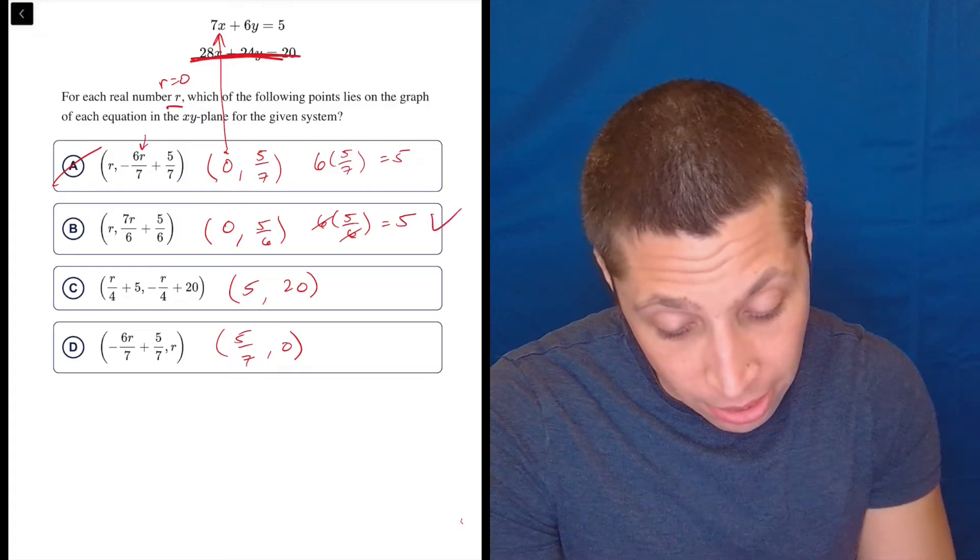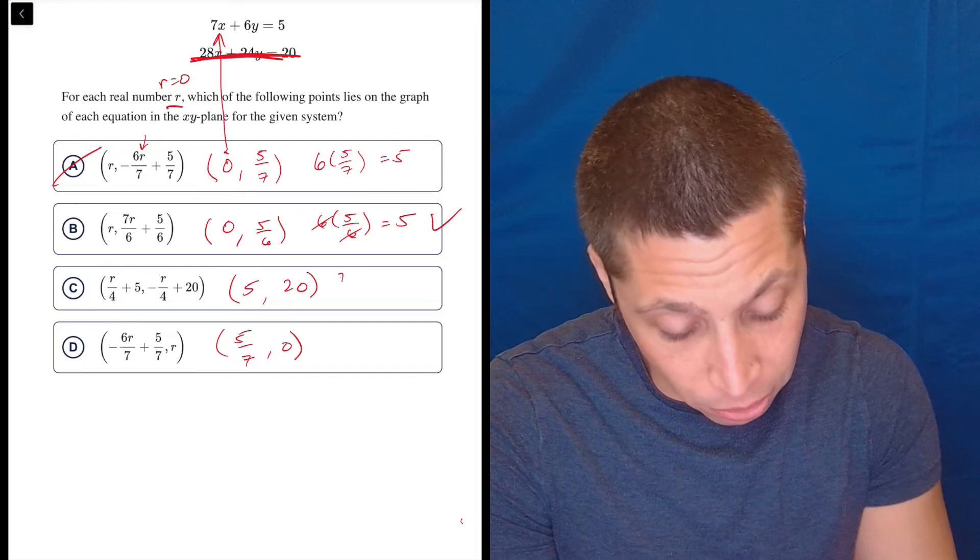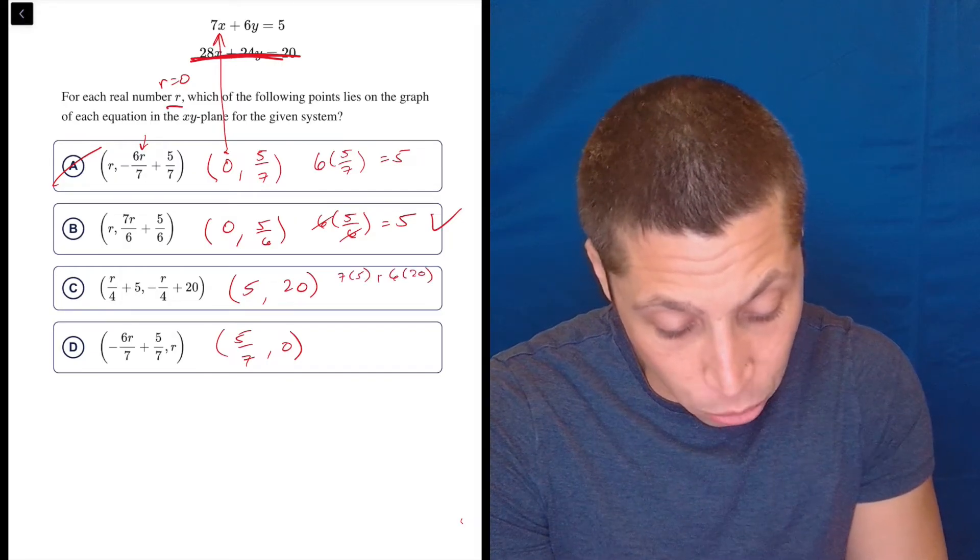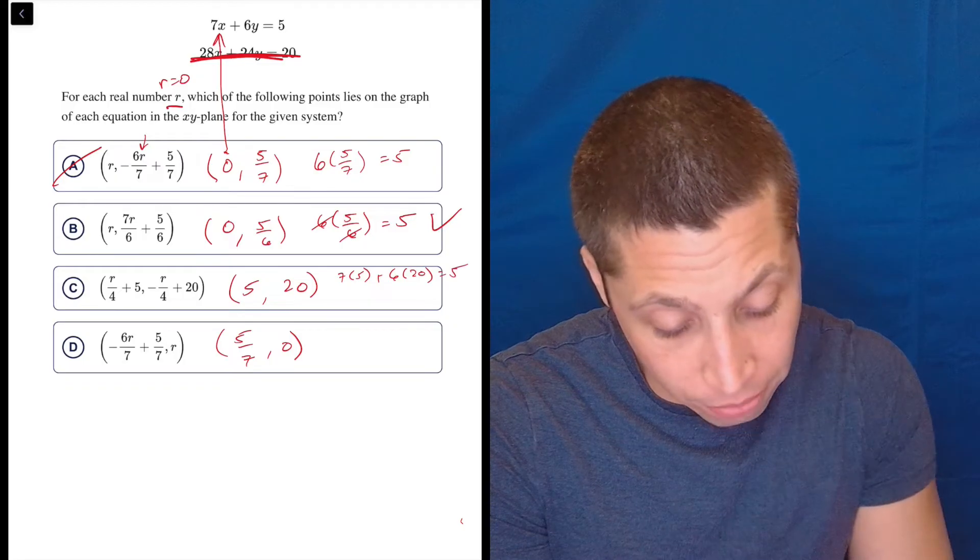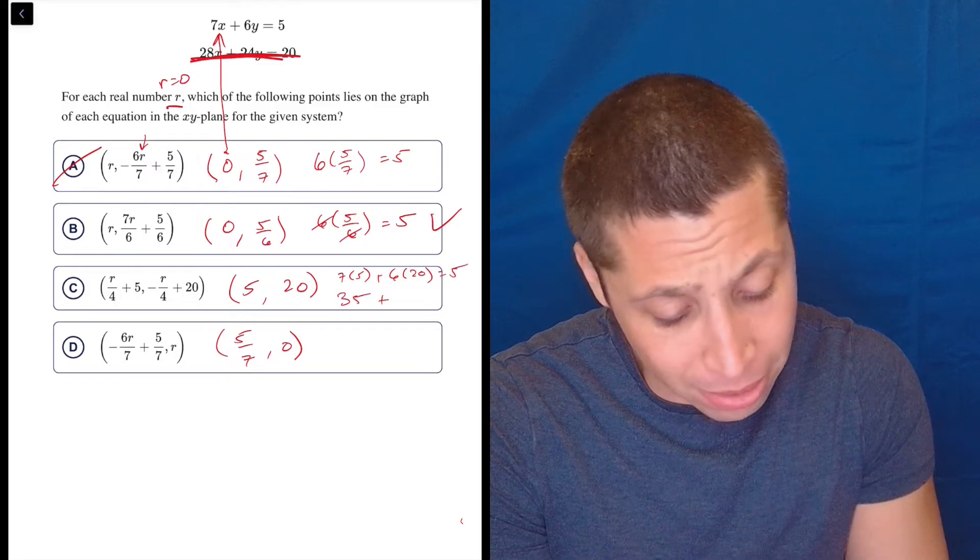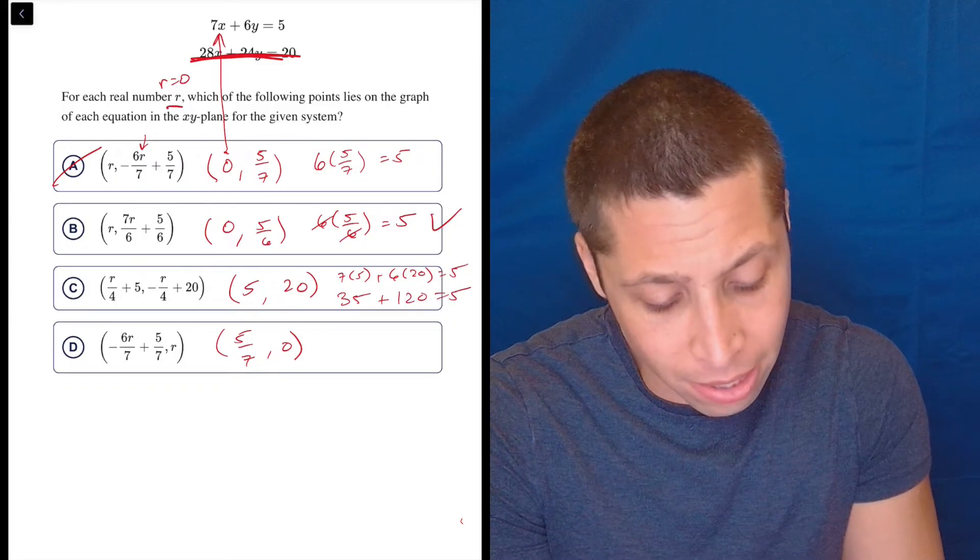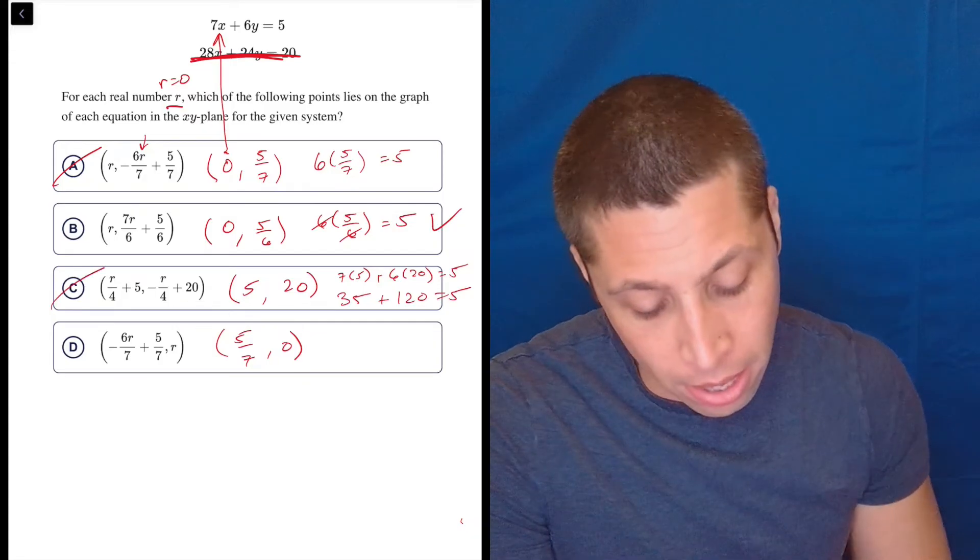Now if I do choice C, that's 7 times 5. So 7 times 5 plus 6 times 20 equals 5. So that's 35 plus 120. No, that does not equal 5. So gone.